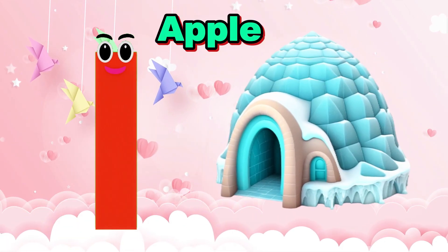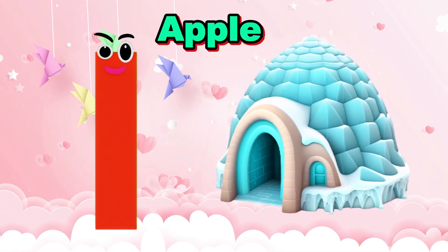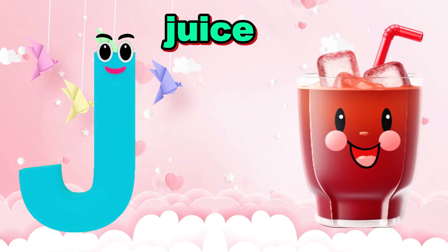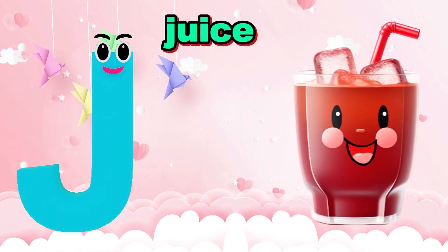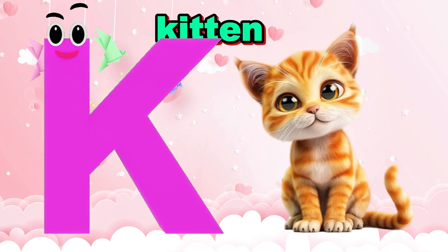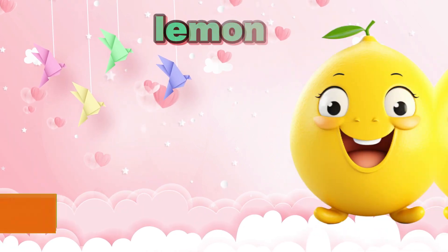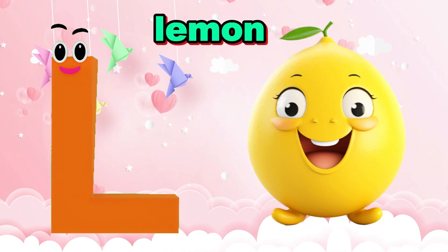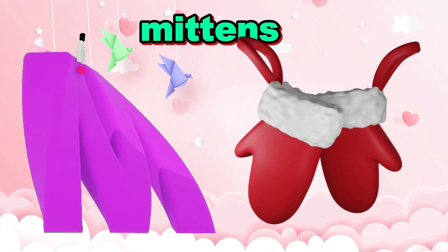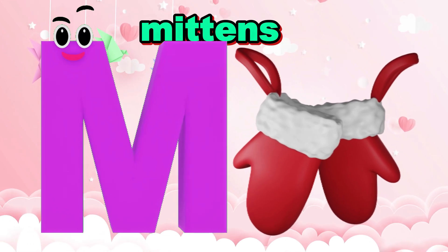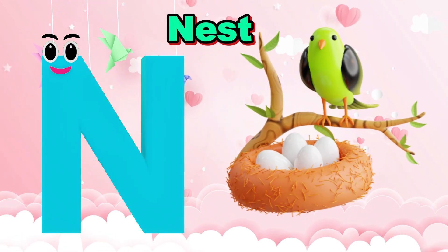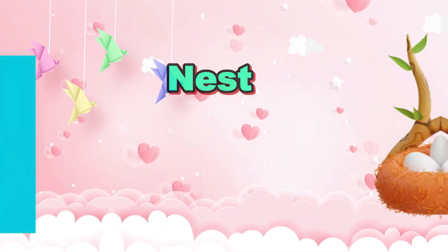I is for Igloo, i-i-igloo. J is for Juice, j-j-j-juice. K is for Kitten, k-k-kitten. L is for Lemon, l-l-lemon. M is for Mitten, l-l-littens. N is for Nest, n-n-n-nest.